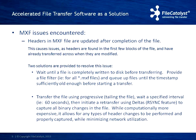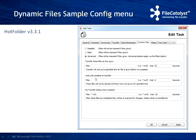This is our upcoming Hot Folder version 3.3.1. What you see here are the dynamic file settings and features you can enable. You can decide what rules you'd like — how you'd like the software to behave when it encounters files that seem to be growing and changing. They're very easy to use, and this is what will be used in the coming weeks.